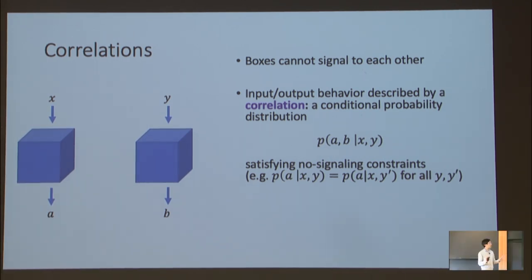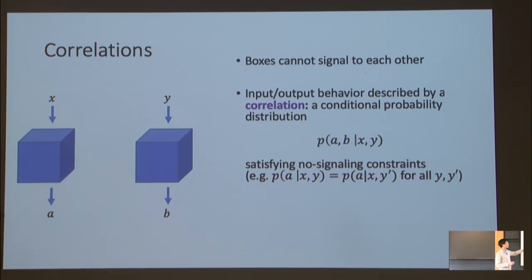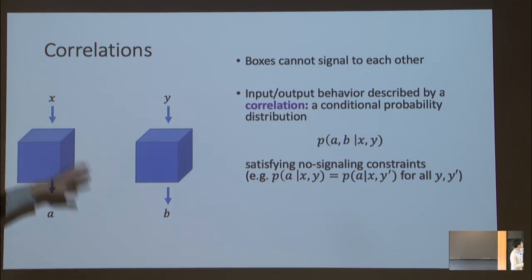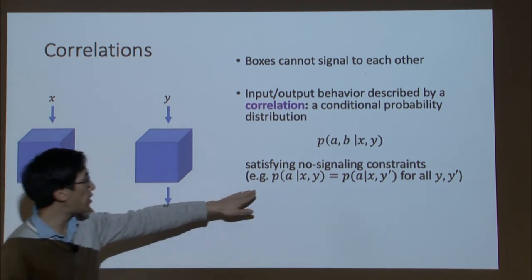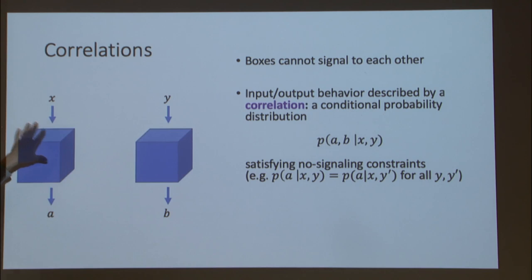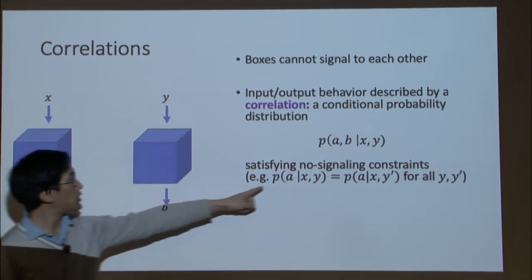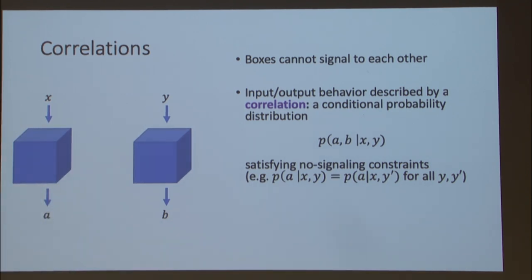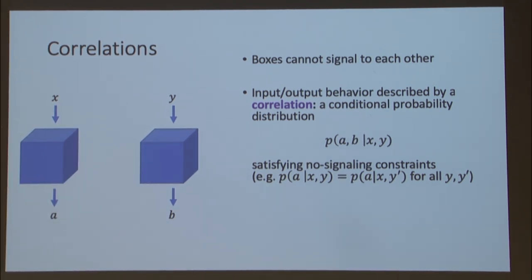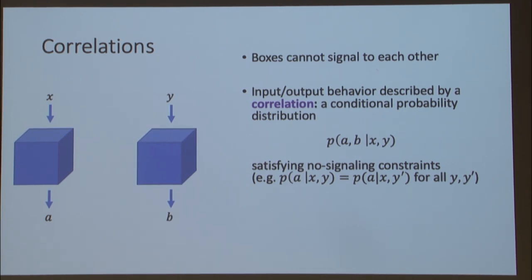We model their behavior via a correlation — a conditional probability distribution that says if the two boxes get inputs x and y, they have some probability of producing outputs a and b. To model the fact that these boxes are placed far apart and can't signal each other, this correlation must satisfy a non-signaling constraint. For example, the marginal probability that the left box produces output a should only depend on input x.